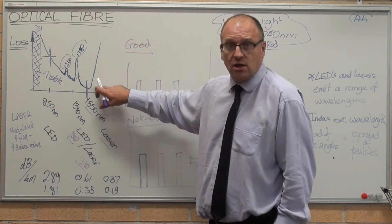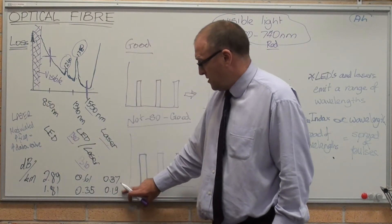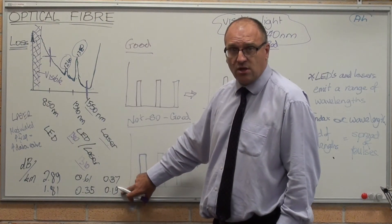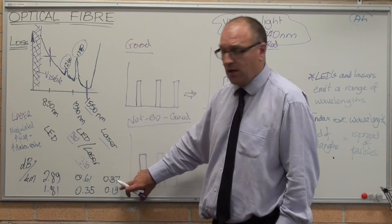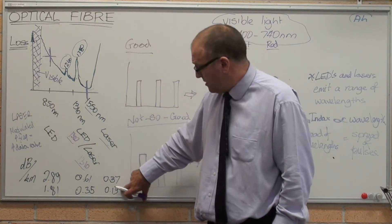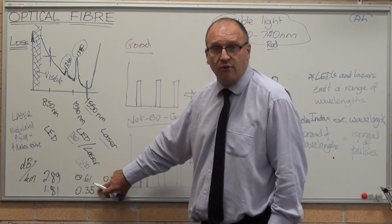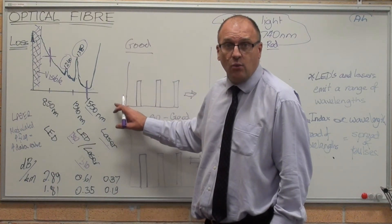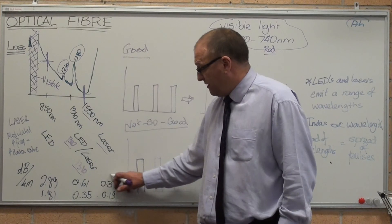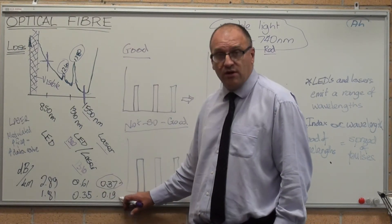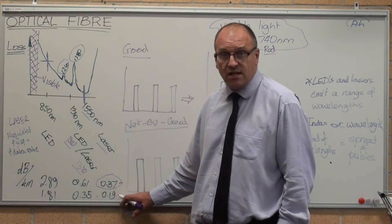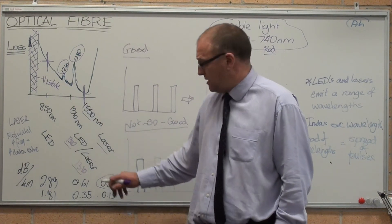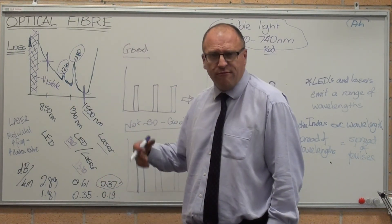Not only do we get less loss - here we are: 0.2 decibels per kilometer in single-mode, 0.4 in multi-mode. We get less loss working at the higher wavelengths, the lower frequencies - very tiny loss, 0.2 decibels per kilometer in single-mode.